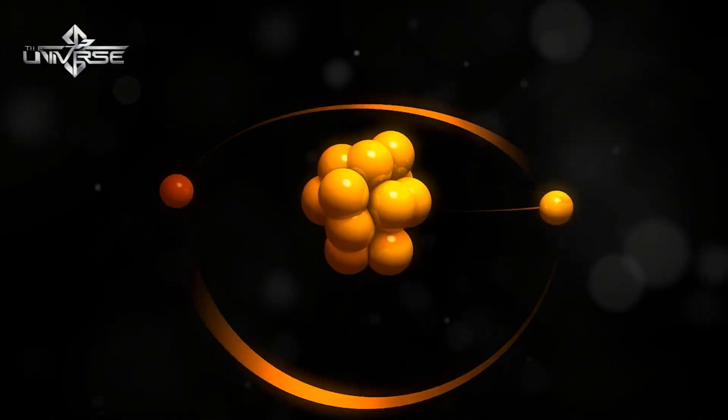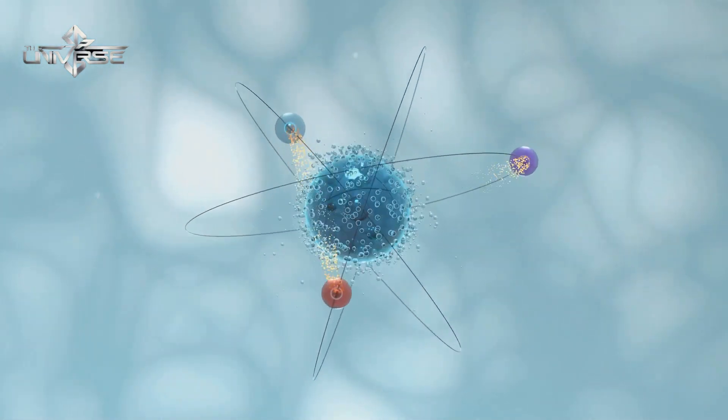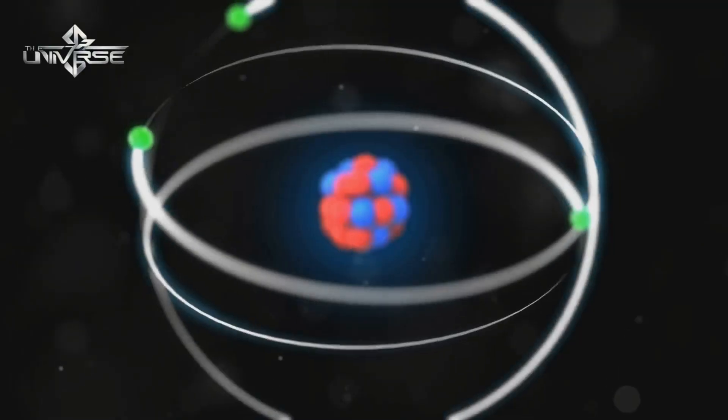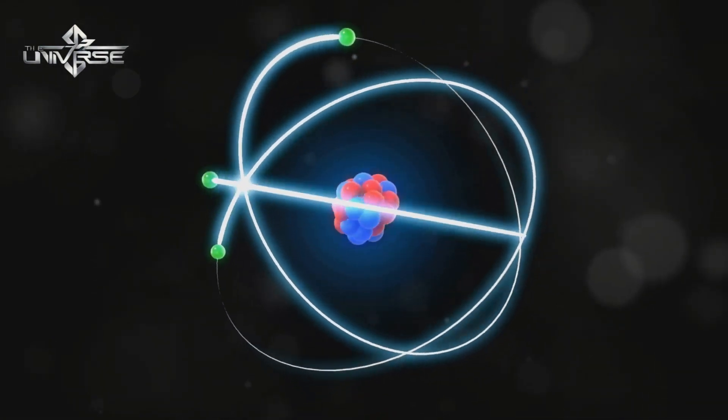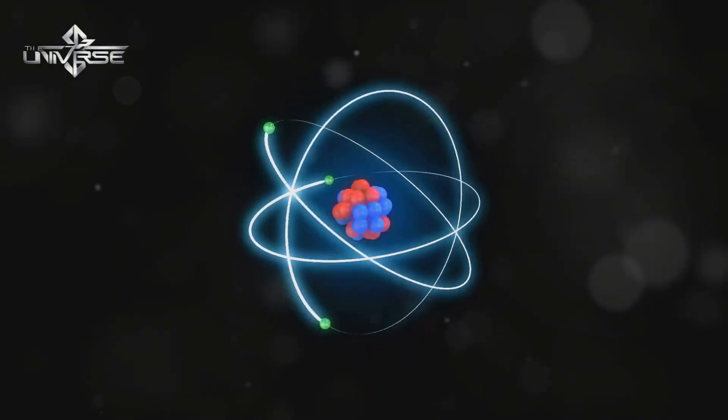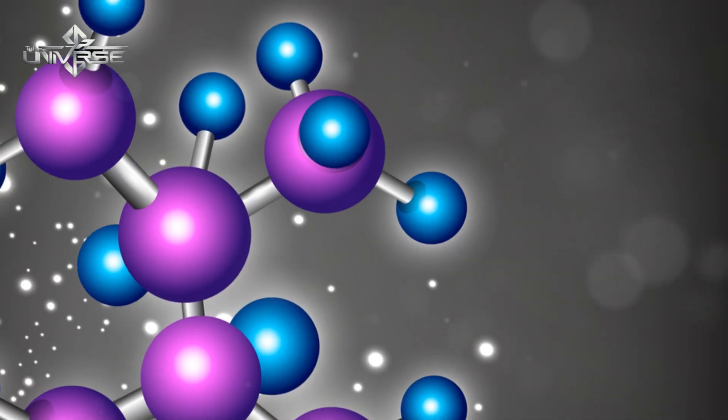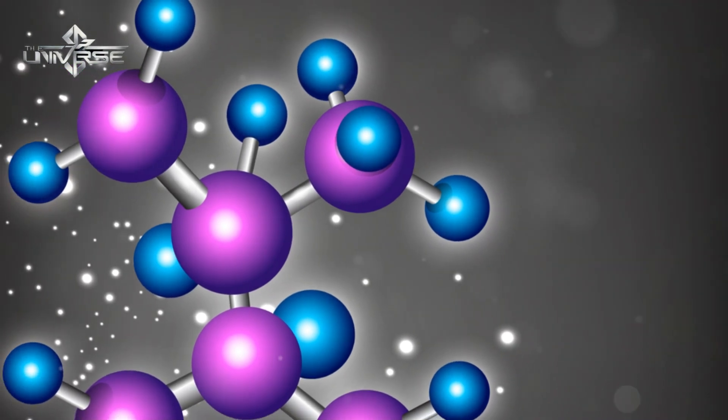Orbiting far away, relatively speaking, are the electrons. So far away that most of the atom is actually empty space. If you could magnify a single atom to the size of a stadium, the nucleus would be a tiny marble at the center, while the electrons would be buzzing around the outer edges. Everything in between? Almost entirely empty.